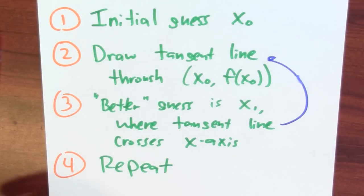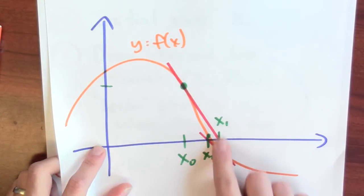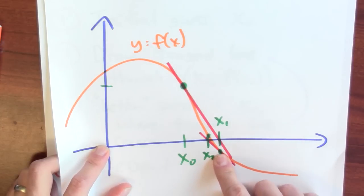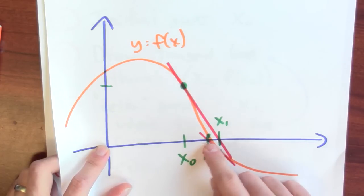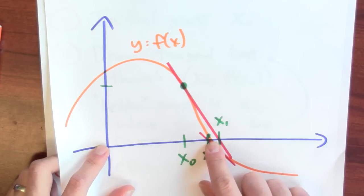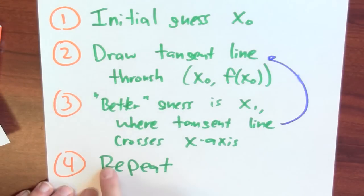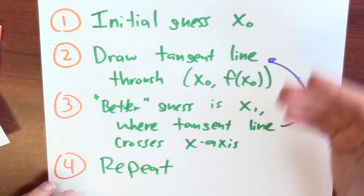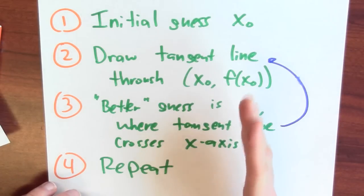Then I repeat the process. Once I have the new guess x sub 1, I draw the tangent line to the graph at (x1, f(x1)), and that tangent line intersects the x-axis at x sub 2 — hopefully an even better guess as to where the graph actually crosses the x-axis. You can keep repeating this as long as you want, hopefully getting better and better guesses every time. Let's work this all out with equations — I'll write down the equation of the tangent line and solve for where it crosses the x-axis.